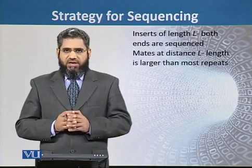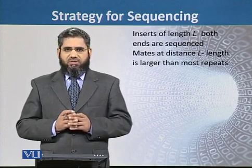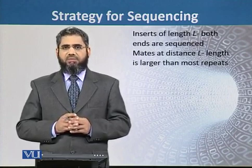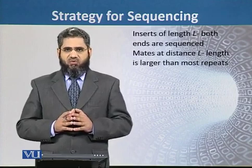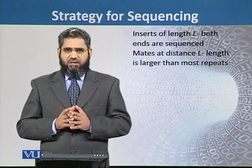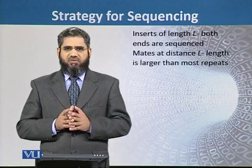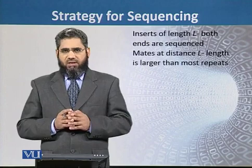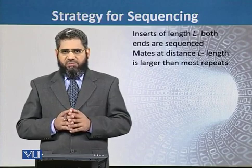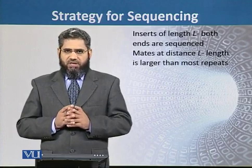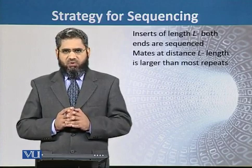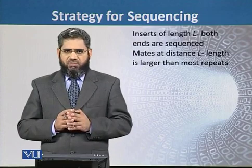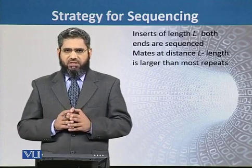The reads produced after sequencing of both ends are called Mates, and they have a distance of L that is much larger than the sequences present within the human genome sequence. The advantage of sequencing at both ends and producing Mates is that there is very little chance that both sequences will fall within the repeated units and fragments in the human genome.